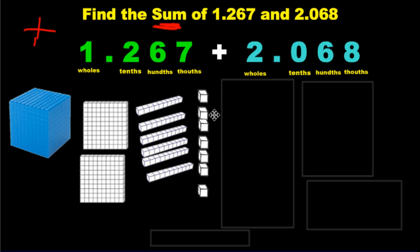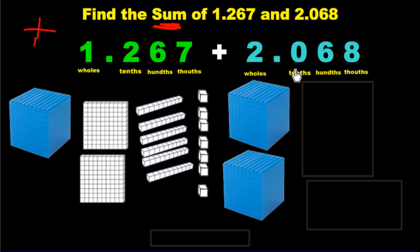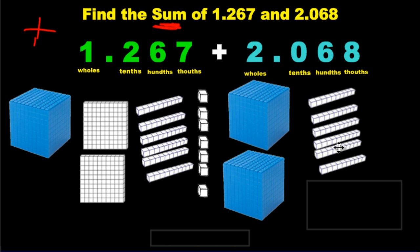I need to show more blocks. I need to show two wholes. I need to show zero more tenths, so leave the tenths alone. These flats are done. We need six hundredths and we need eight thousandths.